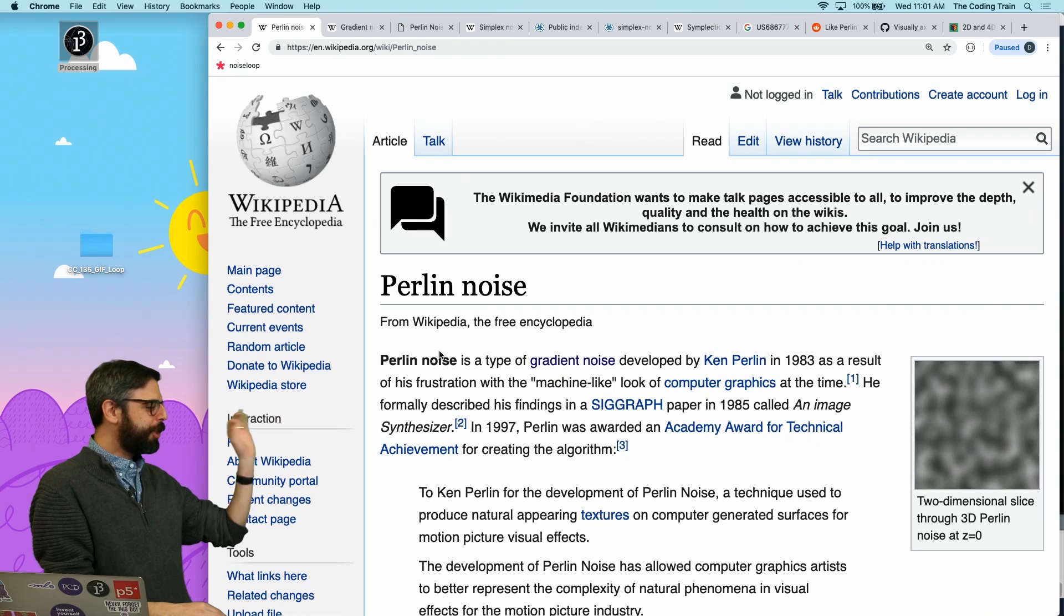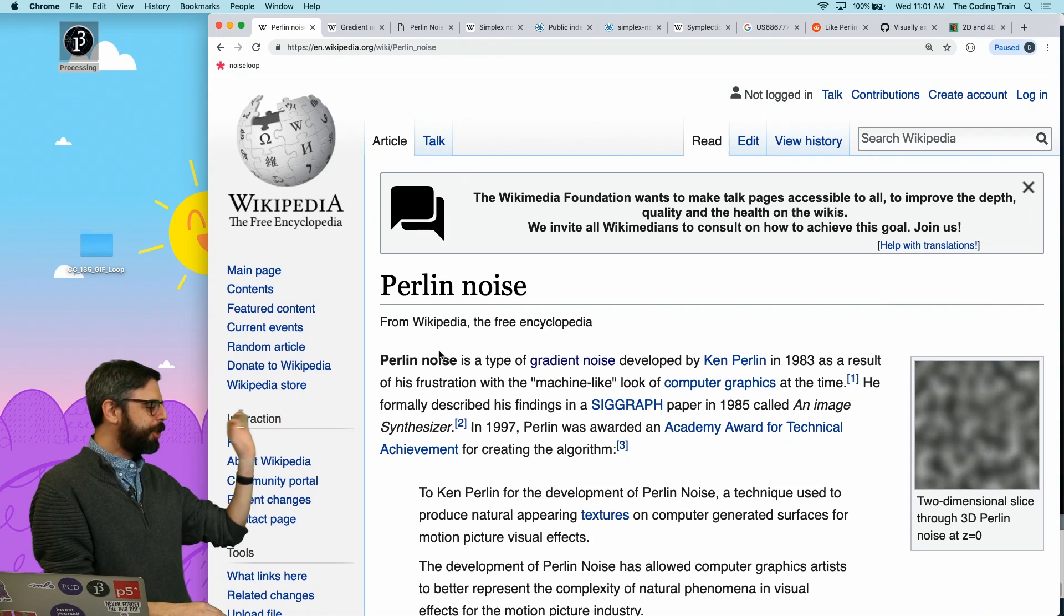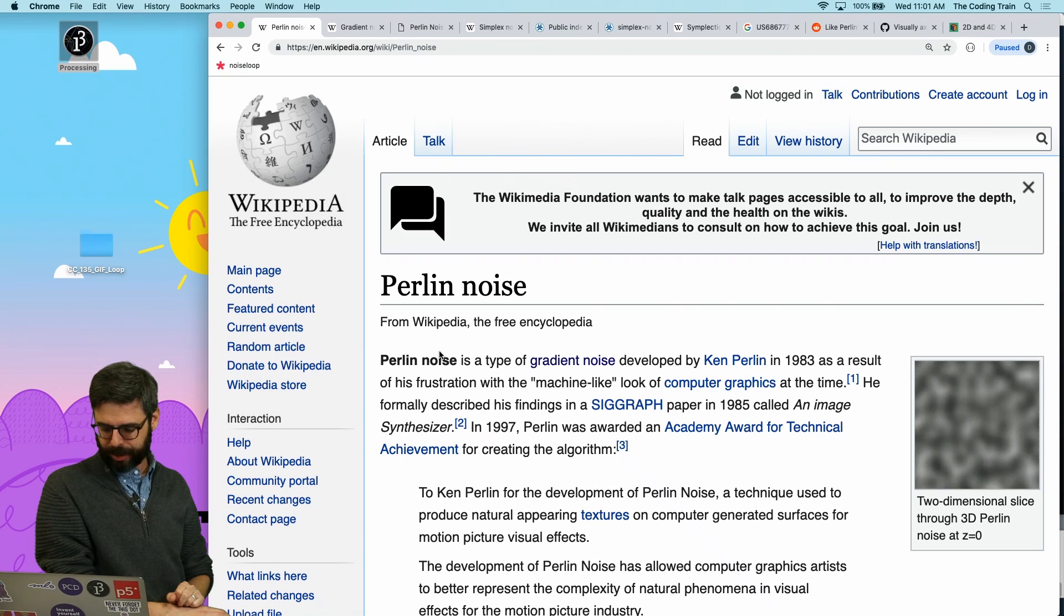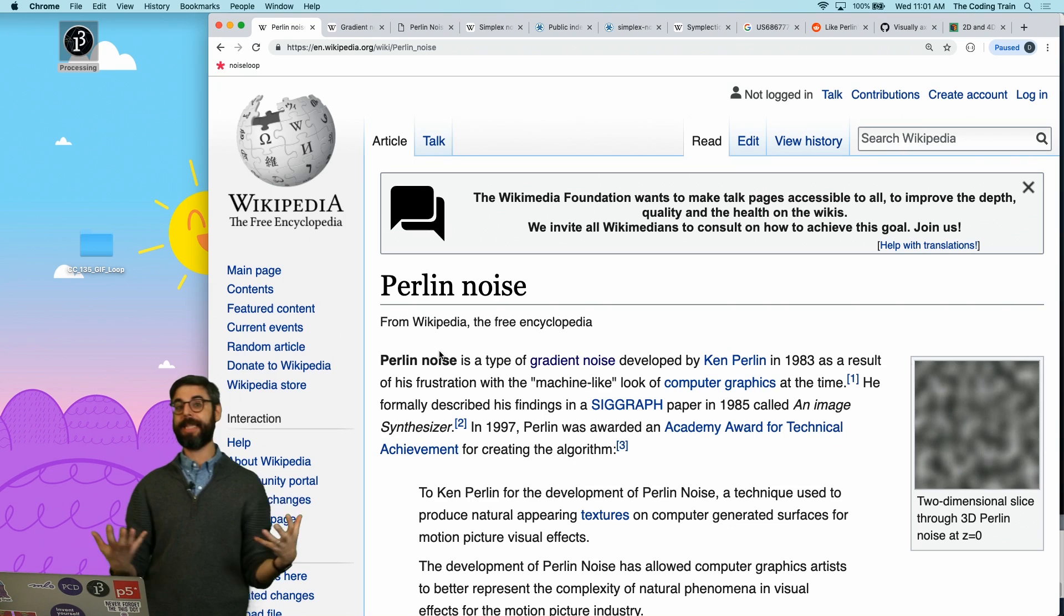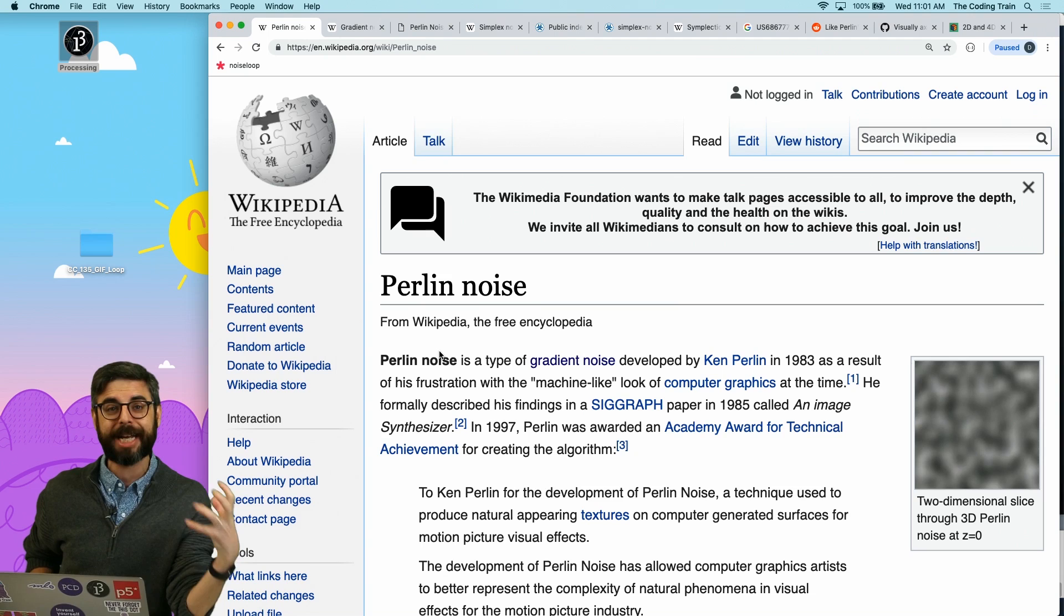1983, the original Perlin noise, a type of what's known as gradient noise, was developed by Ken Perlin in 1983. Ken Perlin won an Academy Award for this work. It is the algorithm that forms the basis for the source code, the implementation that's in Processing itself in all these videos I've made about Perlin noise.